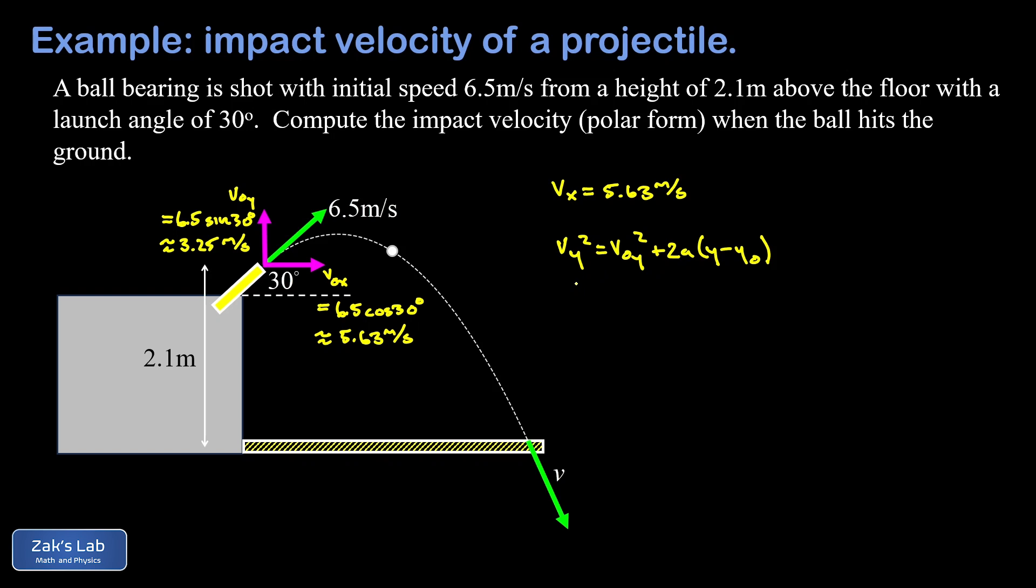Vertically this is a free fall problem, so we have everything in this equation except the final y speed and we can go ahead and plug everything in and solve for v_y.